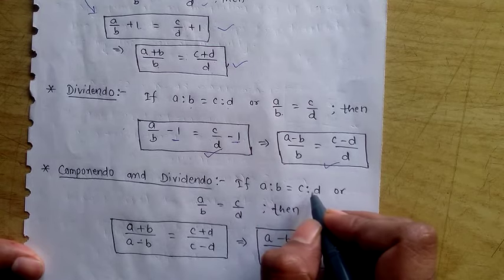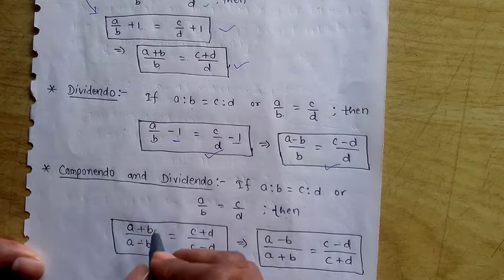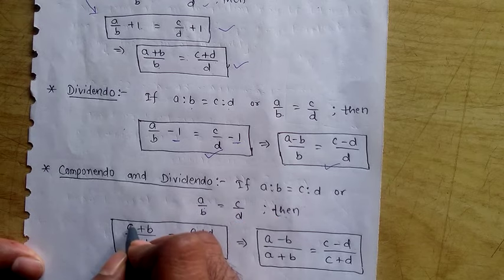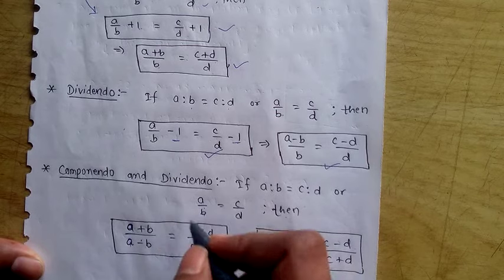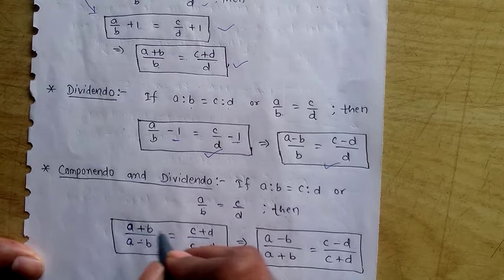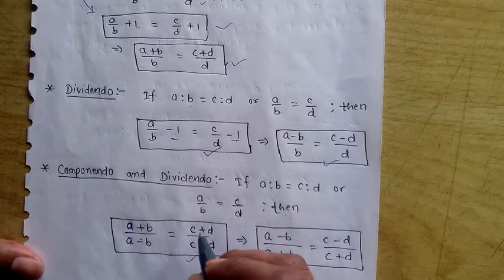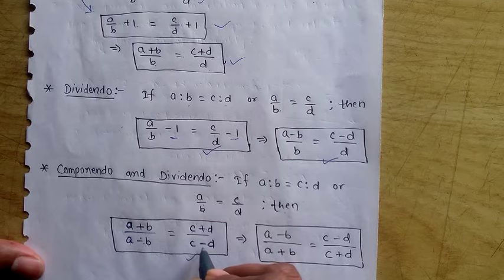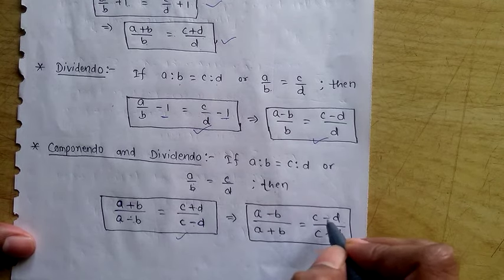The combination of both — Componendo and Dividendo. If a/b = c/d, then we write a/a on both sides with the denominator quantity written as positive and negative. Similarly on the right side, c is written with +d and −d. So we get (a + b)/(a − b) = (c + d)/(c − d). If negative is on top, negative is applied to both sides.